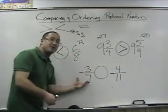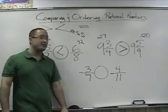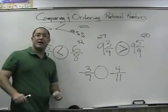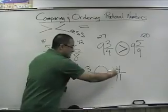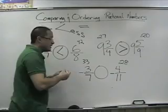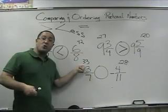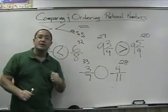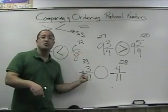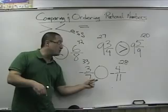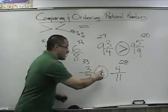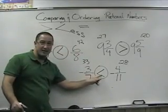What happens if we're dealing with negatives? We have negative 3 sevenths compared to negative 4 elevenths — they're both negative. Do the same thing: 7 times 4 is 28, and 11 times 3 is 33. Normally the fraction with the bigger corner number is greater, but these are negatives. And what do we know about negatives? The bigger the negative number, the lesser in value. So if they're both negative, the fraction with the smallest number in its corner is the greater fraction. Therefore, negative 3 sevenths is less than negative 4 elevenths.